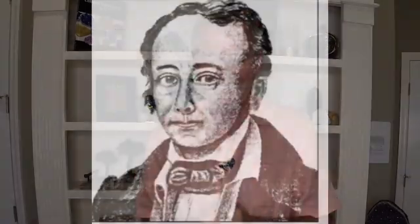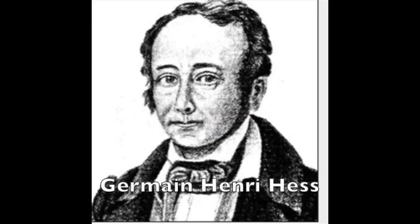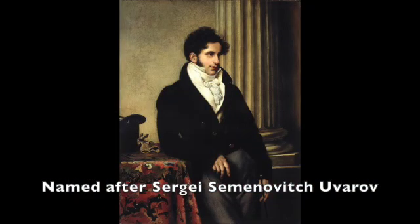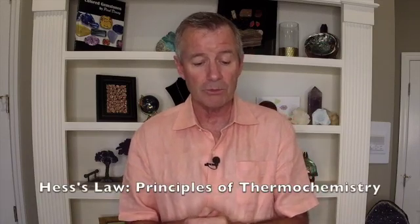Where did the name uvarovite come from? It was first discovered in 1832 by Germain Henry Hess, who named it after Count Sergei Semenovich Uvarov, who lived from 1765 to 1855 — a Russian statesman and amateur mineral collector. As for Hess, the discoverer, he was a Swiss-Russian chemist and doctor who formulated Hess's Law, an early principle of thermochemistry.